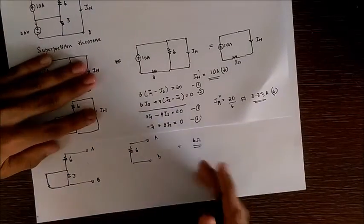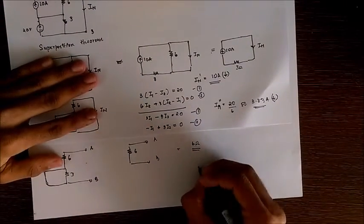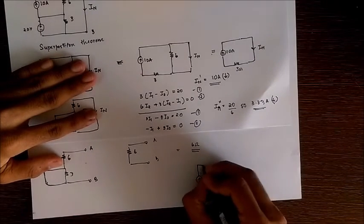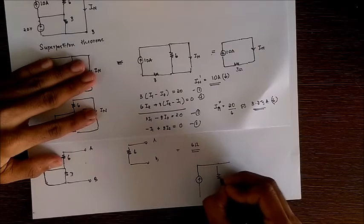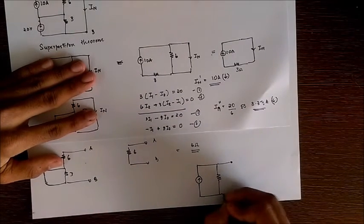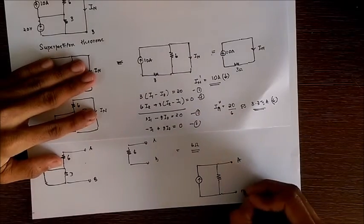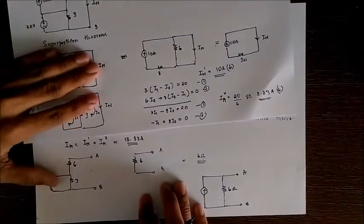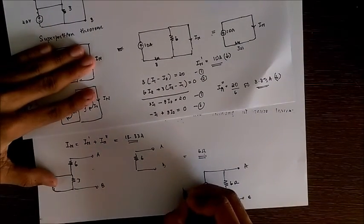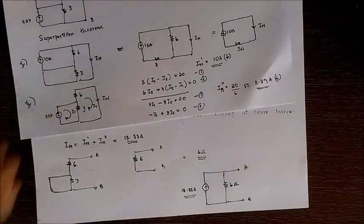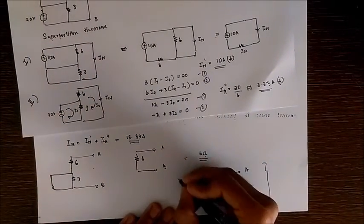So the Norton's equivalent is our current source in parallel with a resistance. And this resistance we got as 6 Ohm and the Norton current we got as 13.33 Amperes. So this is our Norton's equivalent.